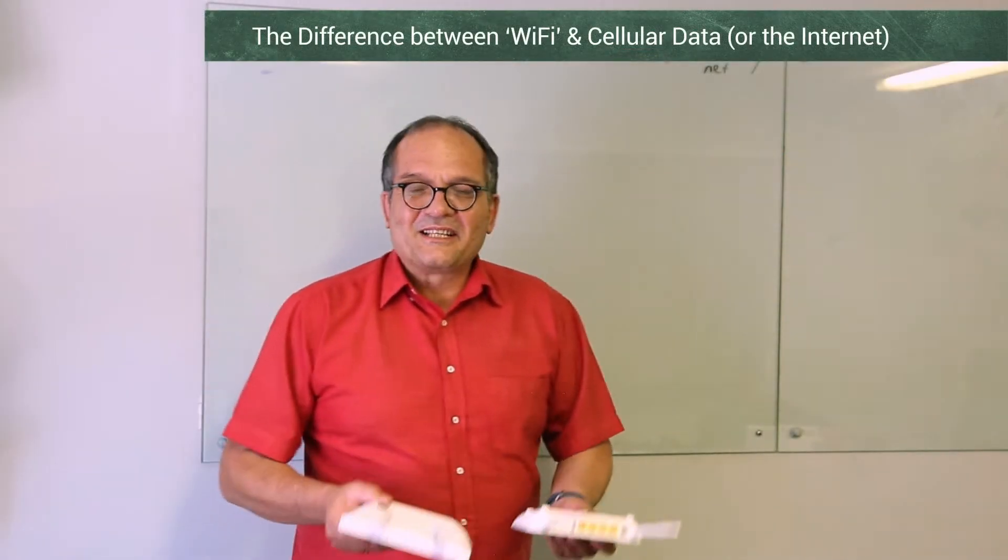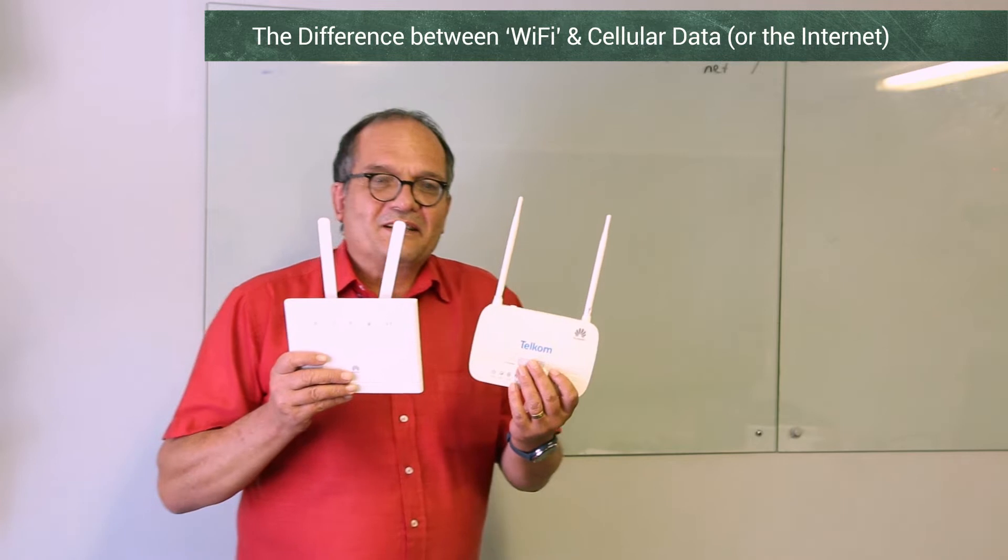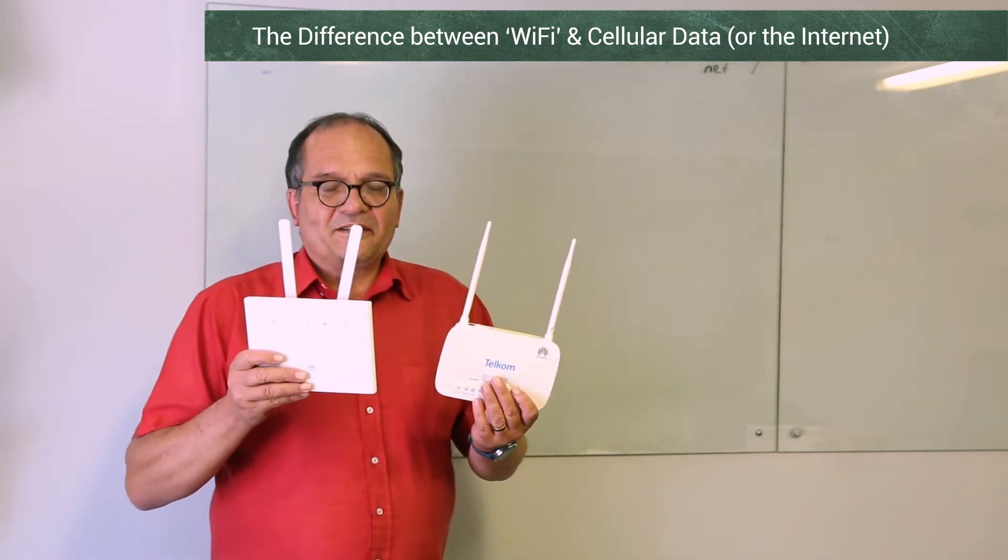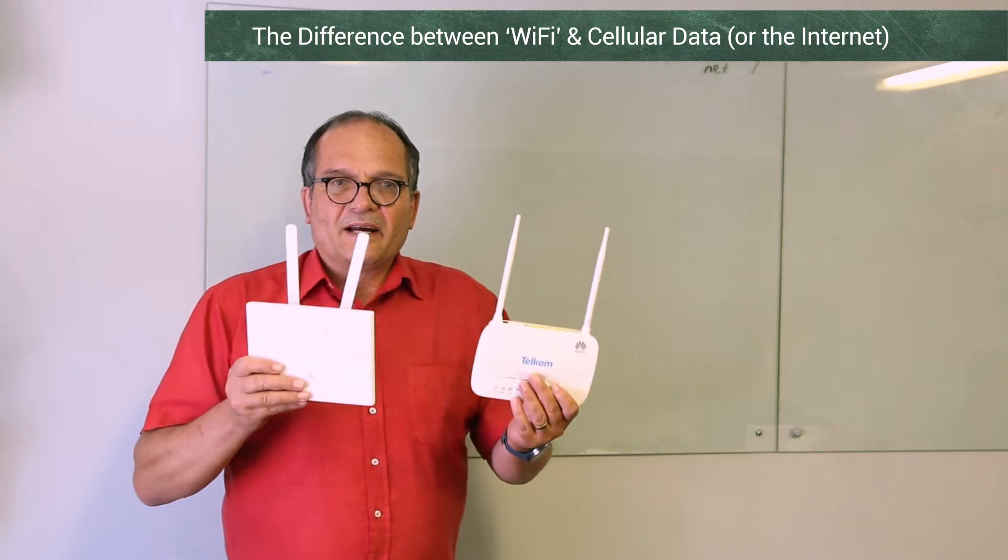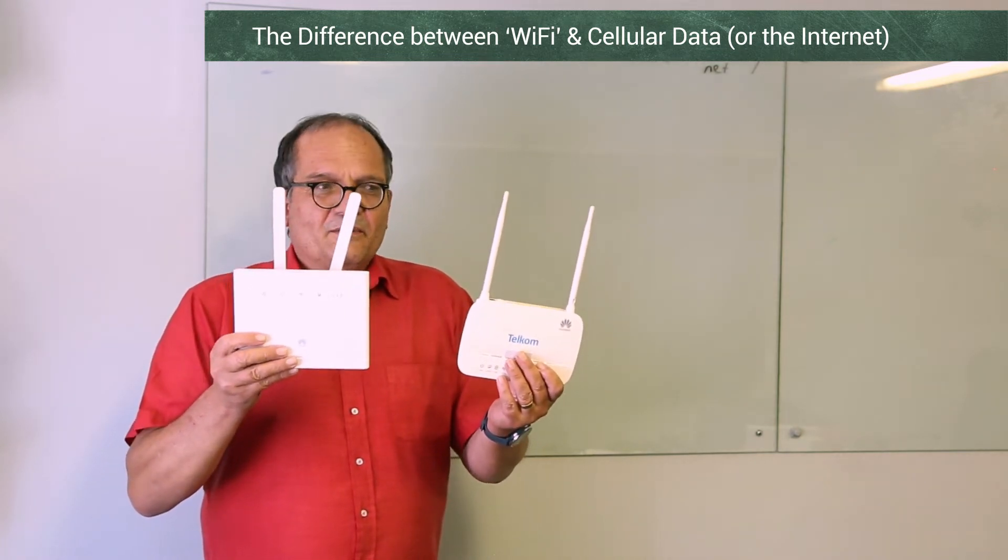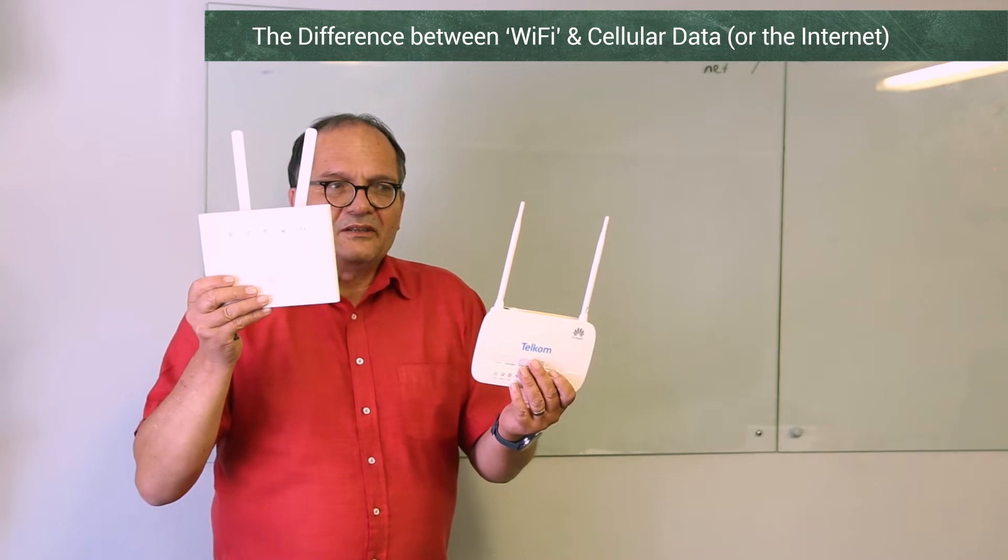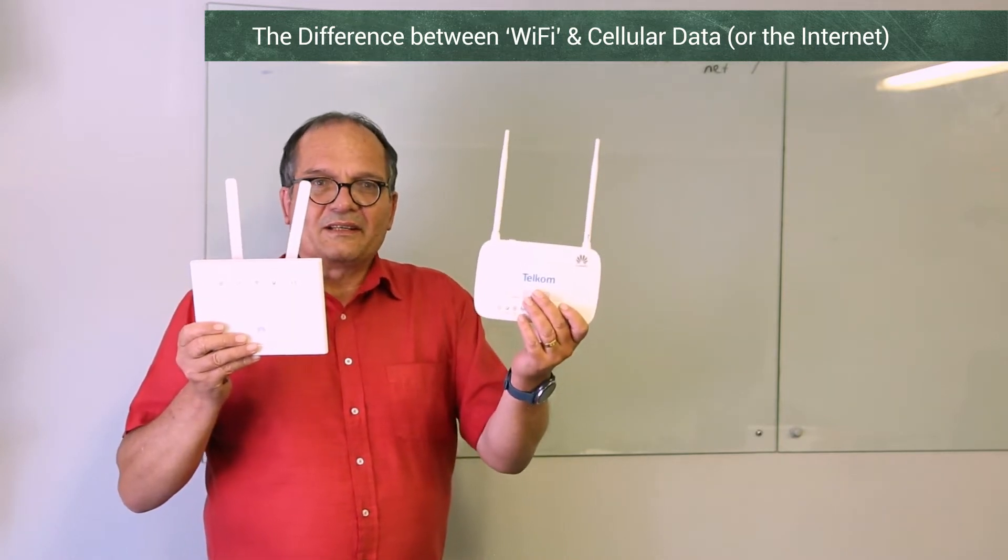Hi everyone, this may seem like a stupid question but I hear it so often and I just want to get through the principles. People see, for example, these two guys and both of them give you WiFi. This guy here is an LTE router, this guy here is just a WiFi access point.